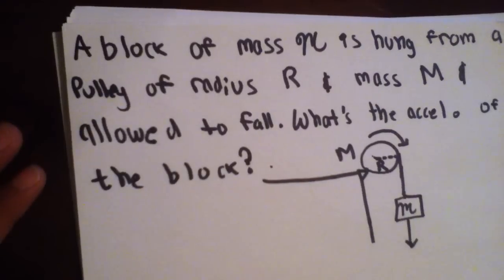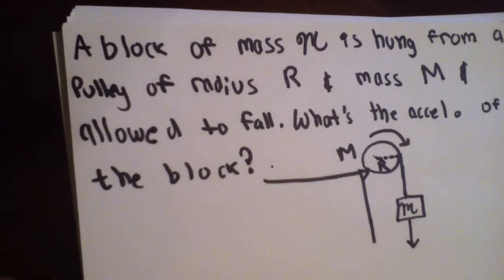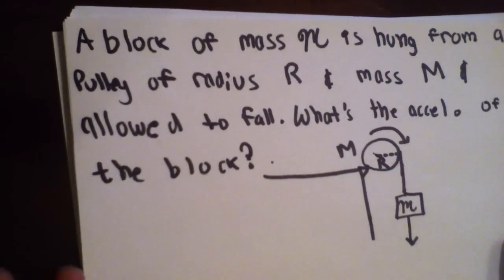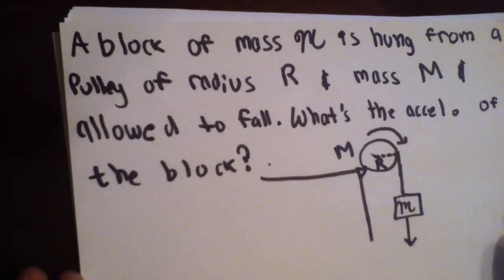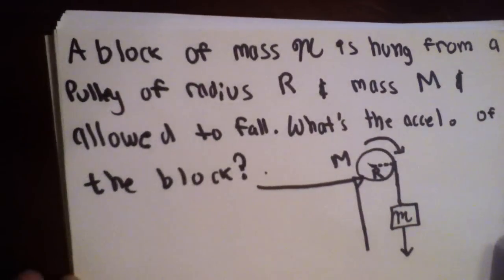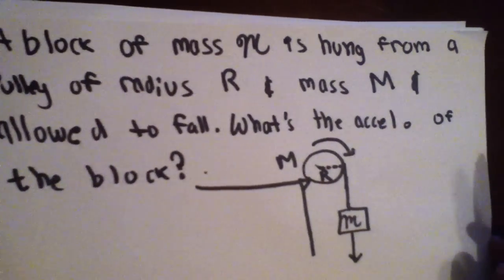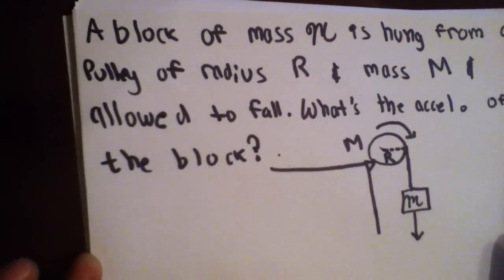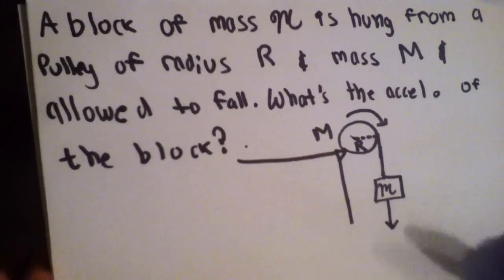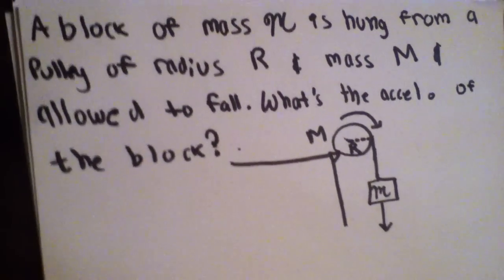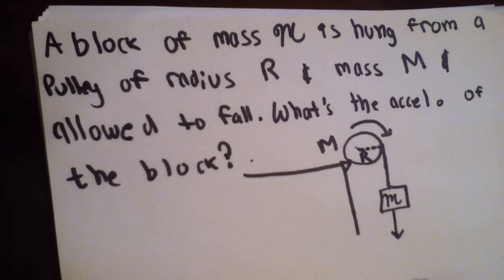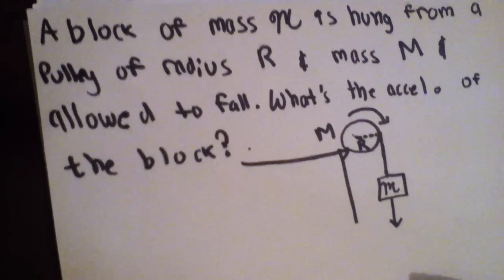Hey guys, this is my first AP Physics C video. I'm going to explain how to do a rotational dynamics problem. It says, a block of mass M is hung from a pulley of radius R and mass M and is allowed to fall. What's the acceleration of the block? Pause the video, maybe you can come up with your solution. Alright, I'm going to explain how to do it now.